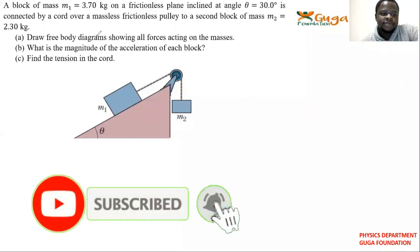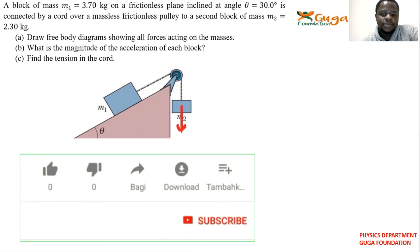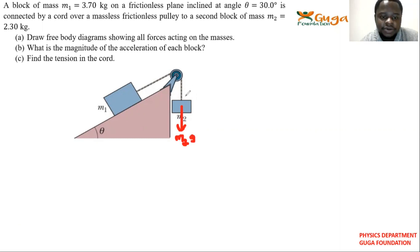The first question is the free body diagram. Starting with m2: on m2 you will have a weight pulling down the block, which is m2g. You also have the tension. You can call this g2 because this is mass 2.